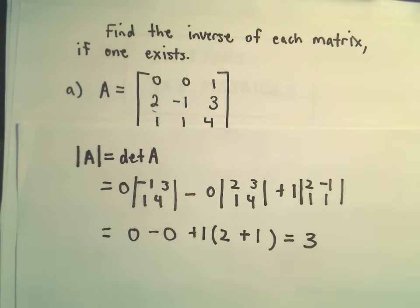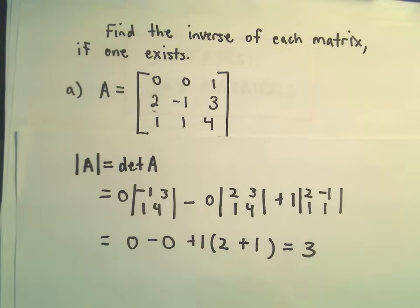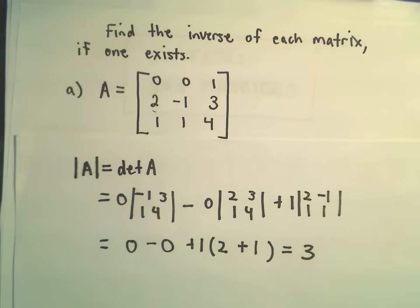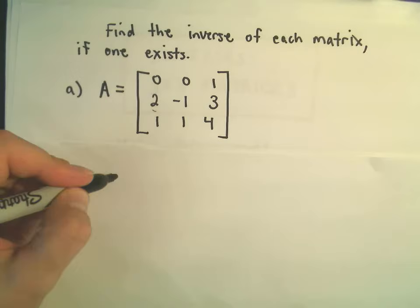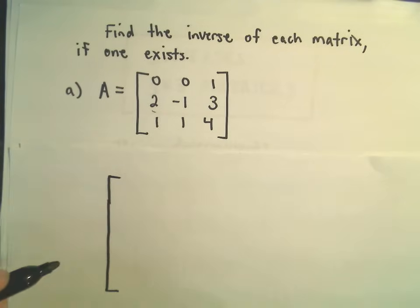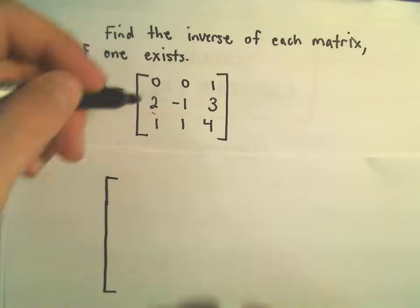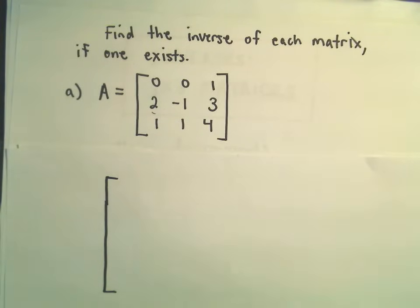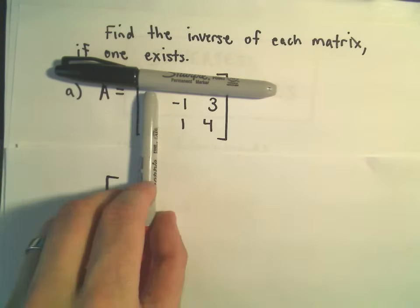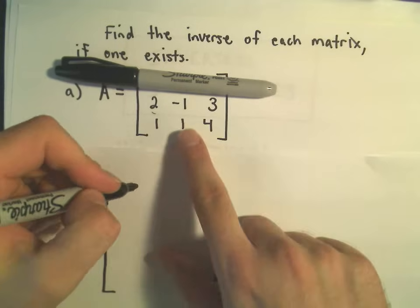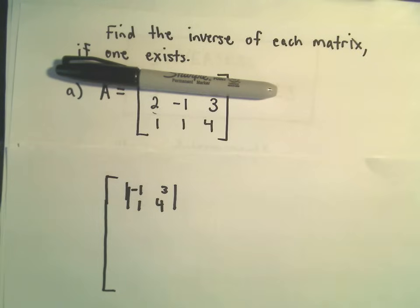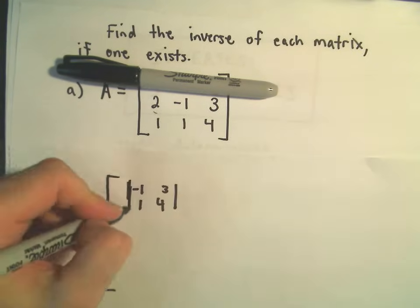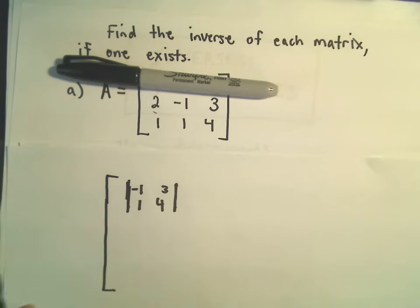So that's one thing we'll have to use here in a little bit. The next thing I'm going to do is find the cofactors. If I cover up the first row and the first column, I'm left with [-1, 3; 1, 4], and I'll calculate the determinant of that. I'll fill in the signs in a moment.